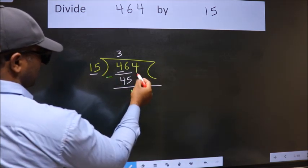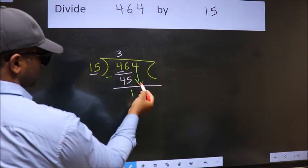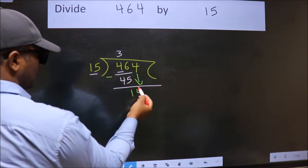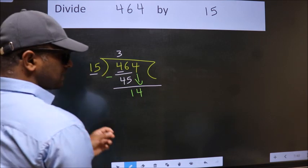After this, bring down the beside number, so 4 down. After this step, the mistake happens.